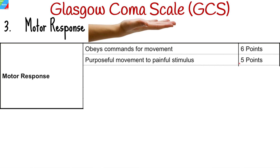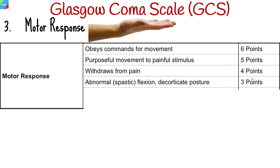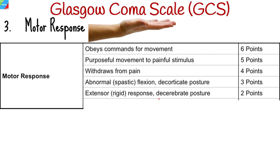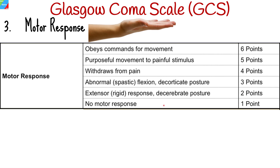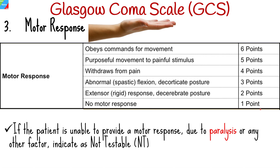Localizing to pain is awarded a score of 5 points. When you deliver a painful stimulation to the patient's fingertip and they try to withdraw their arm away from you, the score awarded is 4 points. If the patient elicits abnormal flexion or decorticate posturing in response to pain, the score awarded is 3 points. If the patient elicits abnormal extension or decerebrate posturing in response to pain, the score awarded is 2 points. The complete lack of a motor response to a painful stimulus scores 1 point. If the patient is unable to provide a motor response due to paralysis or any other factor, indicate as not testable.